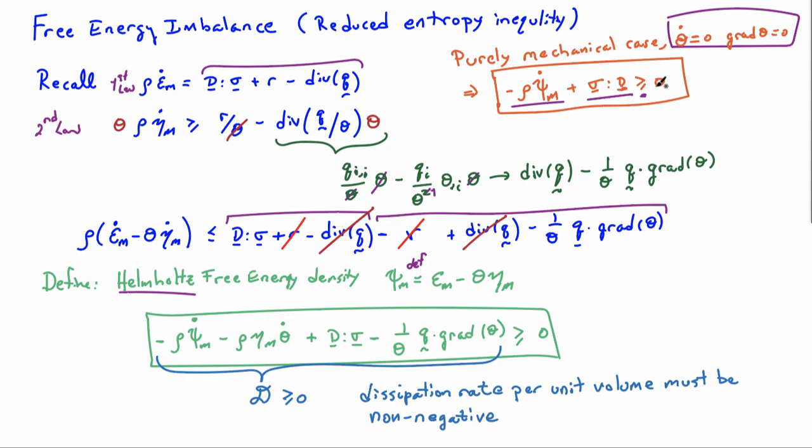Okay. So this relationship, either this one here or this one, they're both known as the free energy imbalance. And this equation is extremely important for determining restrictions on material laws, constitutive laws for various types of materials. It always has to be satisfied.